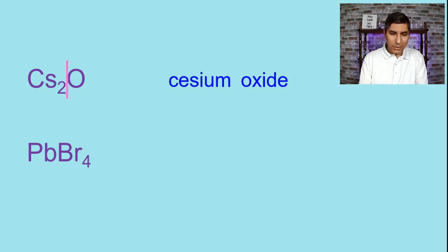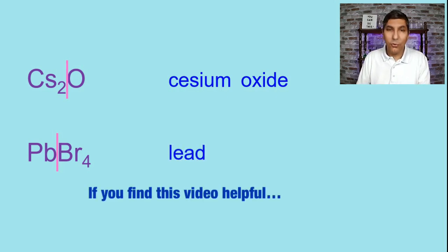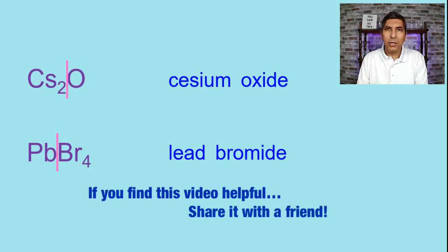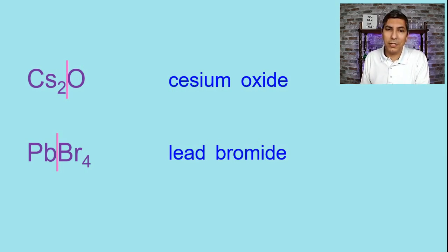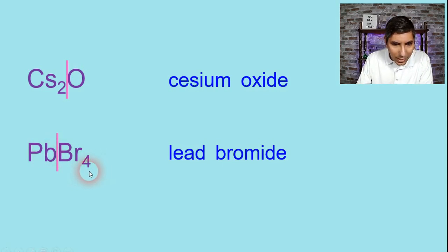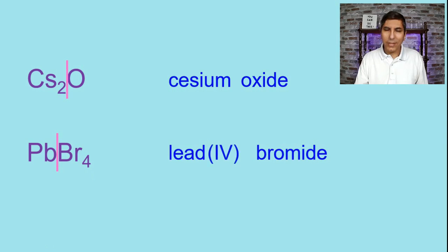PbBr4. Split this down the middle — Pb is the symbol for lead, and Br is the symbol for bromide. We notice that even though lead is not a transition metal, it is one of those exceptions that needs a Roman numeral in parentheses. Unswapping the charges, we see the subscript 4, so lead has a charge of positive 4. This should be lead(IV) bromide.